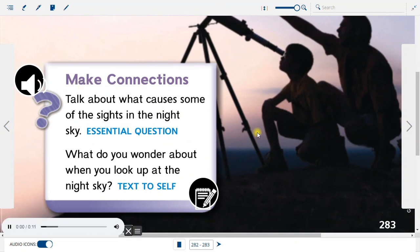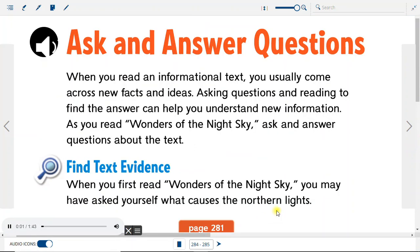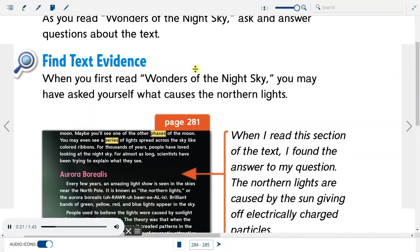Make connections. Talk about what causes some of the sights in the night sky. What do you wonder about when you look up at the night sky? Ask and answer questions. When you read an informational text, you usually come across new facts and ideas. Asking questions and reading to find the answer can help you understand new information. As you read Wonders of the Night Sky, ask and answer questions about the text.